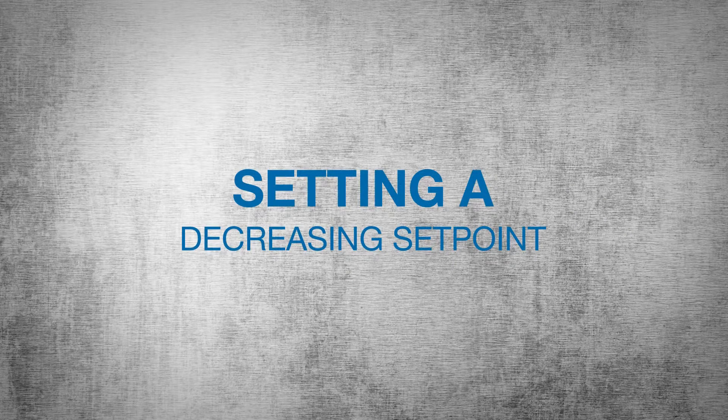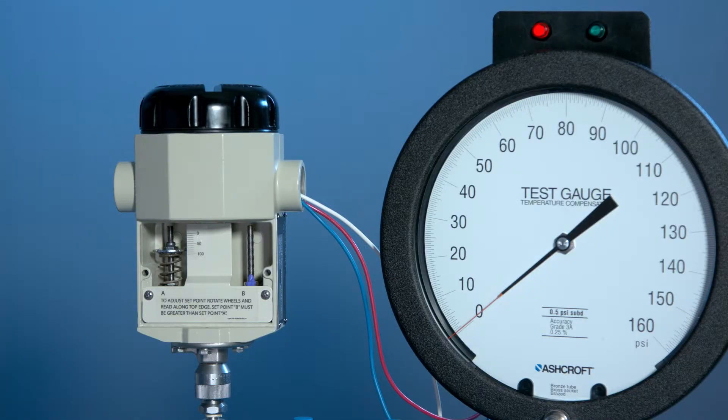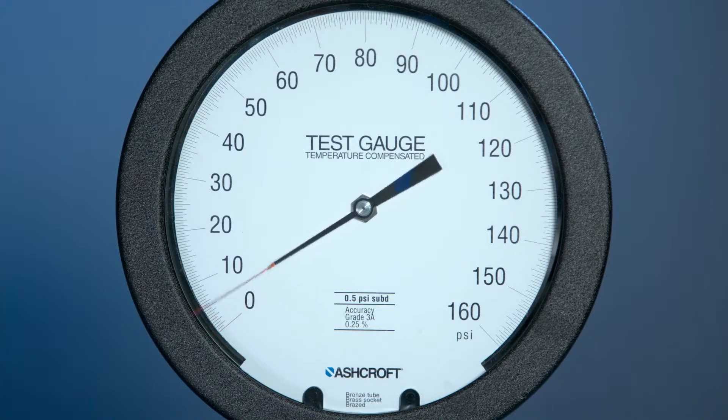We are going to set the switch for 20 PSI decreasing setpoint. To do that, you want to start at zero, take it to the full range of 100 PSI, and then back down to 20. From there we will adjust the switch to turn off.